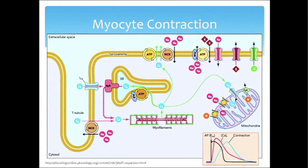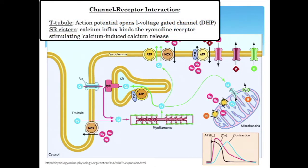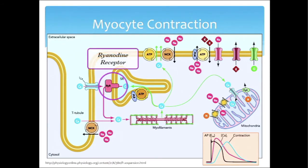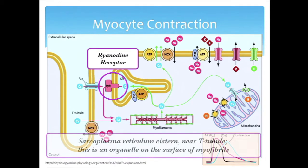The T-tubules help get the message all throughout the myocyte. There is an influx of calcium that occurs — not a major ion flow per se, but very important for cell physiology. When calcium fluxes into the cell as part of that wavefront of depolarization, you get calcium ions rushing into the muscle cell, and they interact with the sarcoplasmic reticulum — in particular, a receptor on its surface.